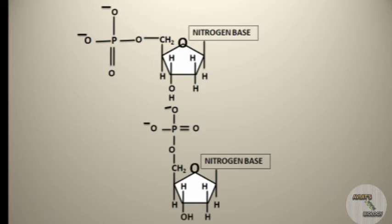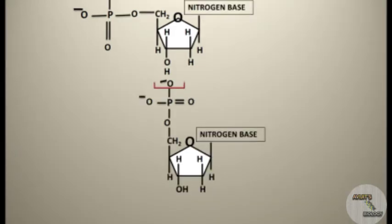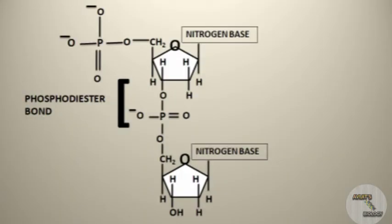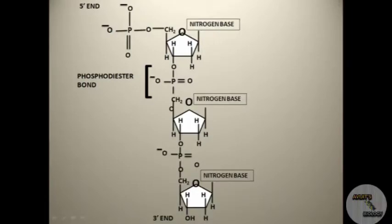Let's see how the nucleotides join together. A hydrogen atom is eliminated along with a water molecule — this is how two nucleotides join together. The linkage between the two nucleotides is called the phosphodiester bond, and this is how a long polynucleotide chain of DNA is formed. One end of this chain consists of a phosphate group and is called the 5' end, and the end where a free hydroxyl group is present is called the 3' end.